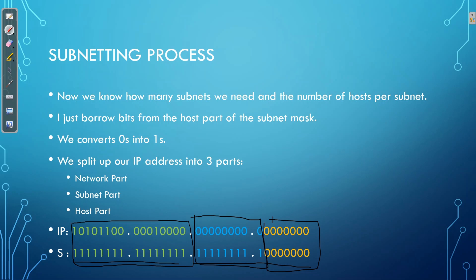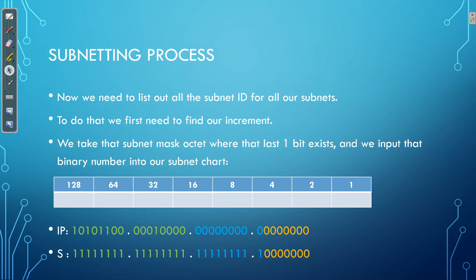It's important to know that in the subnet part we can change the IP address bits — shown in blue here — and the reason we change those is that they allow us to make our different subnets. With the network part, the value of those octets does not change. The subnet bits can change, so we are going to change them. Now we have our brand new subnet mask.